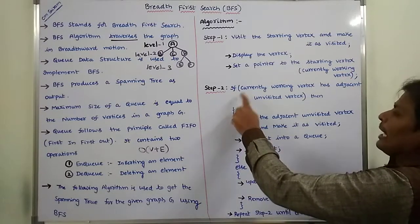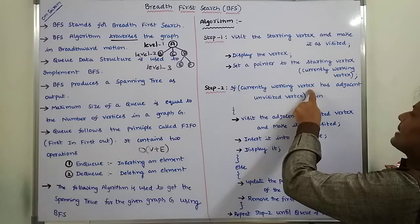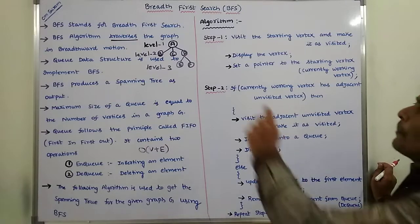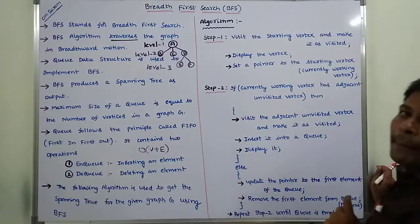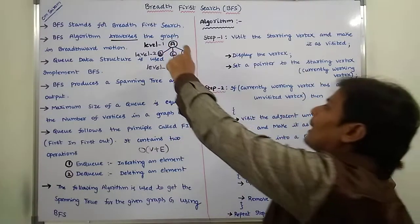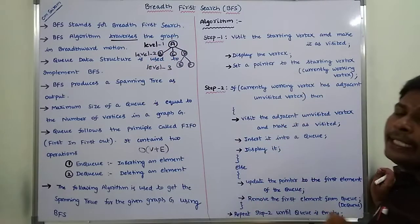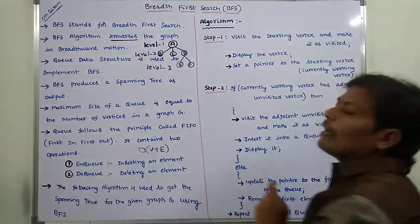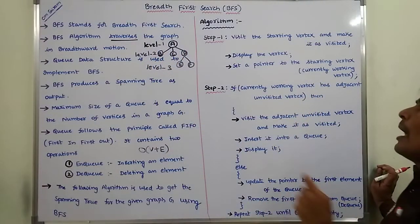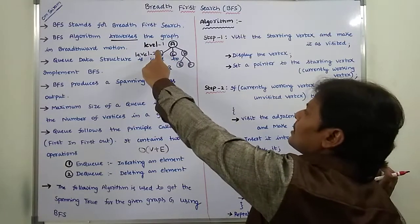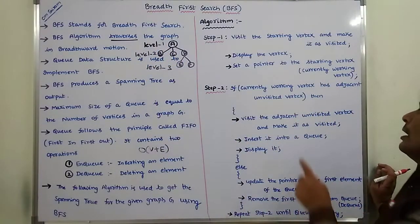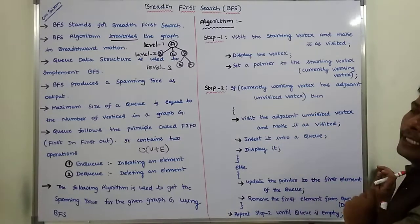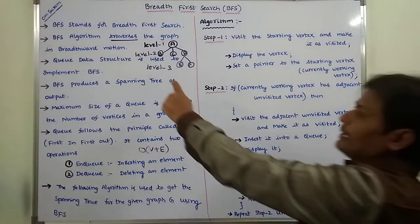Step 2: Check whether the currently working vertex has adjacent unvisited vertices or not. Suppose the currently working vertex is A. Vertex A has unvisited adjacent vertices B, C, and D. Among these three vertices, we first take vertex B. Visit the adjacent unvisited vertex and mark it as visited — so now we visit vertex B.